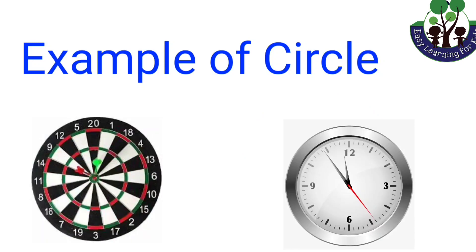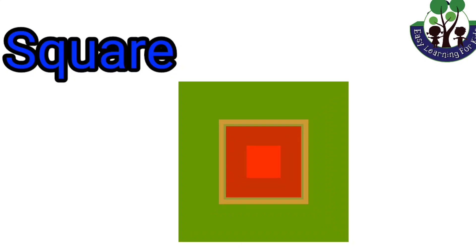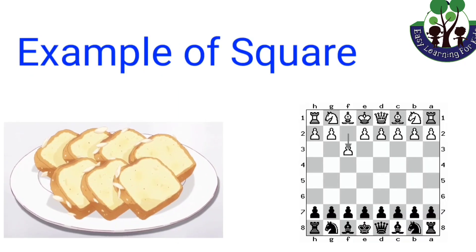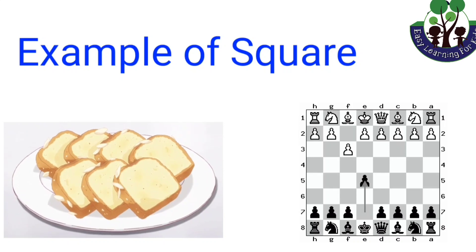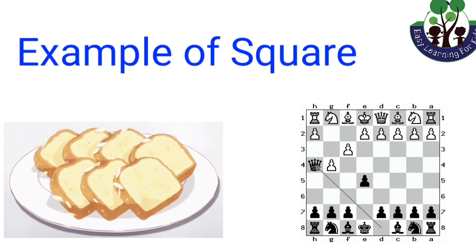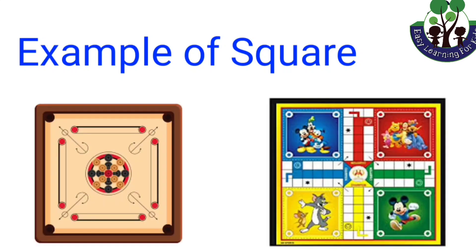Square. A square is a closed 2D shape that is formed by four sides. The length of each side is equal in measurement. For example, bread slices, chess board, carom board, and ludo.